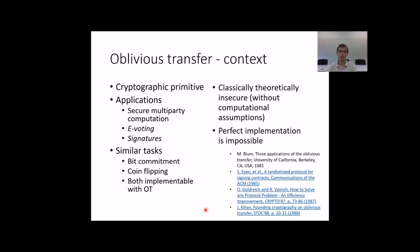Oblivious transfer is a communication or cryptographic primitive. Importantly, OT is universal for secure multiparty computation. For example, it is useful for electronic voting or signing documents. See provided references. There are similar tasks implementable by OT. Bit commitment and coin flipping.